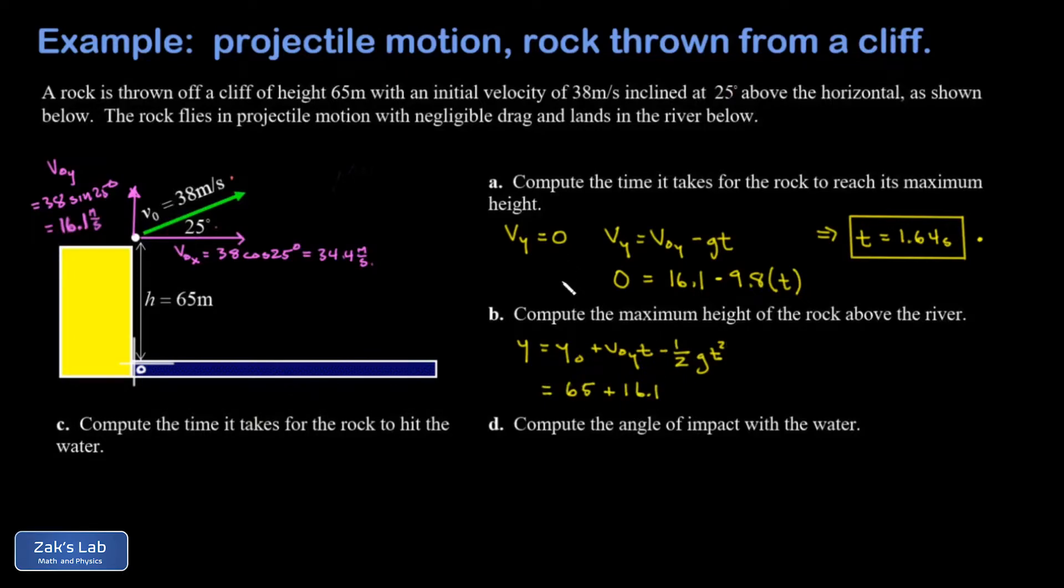We'll throw in the approximation 9.8 for g, and then I have a t squared so 1.64 squared. And we run the numbers on this and obtain a maximum height of 78.2 meters.